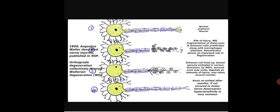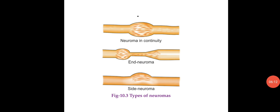In the fourth stage, axons are reunited after months. If the cut occurred in a motor neuron, denervation hypersensitivity is very common. If the endoneural tube is interrupted, the sprouts — as many as 100 from one axonal stump — may form an end neuroma or a neuroma in continuity. An end neuroma forms when the proximal end is widely separated from the distal end; a side neuroma indicates a partial nerve cut.